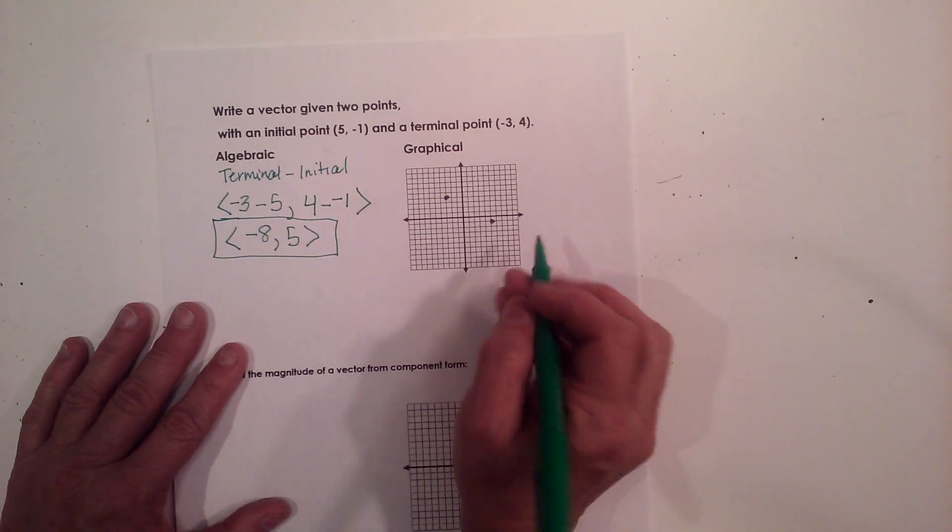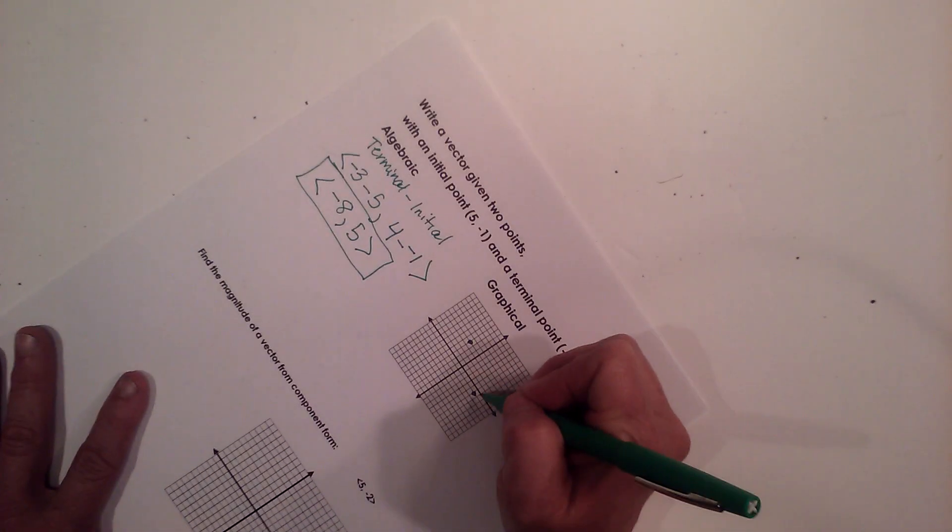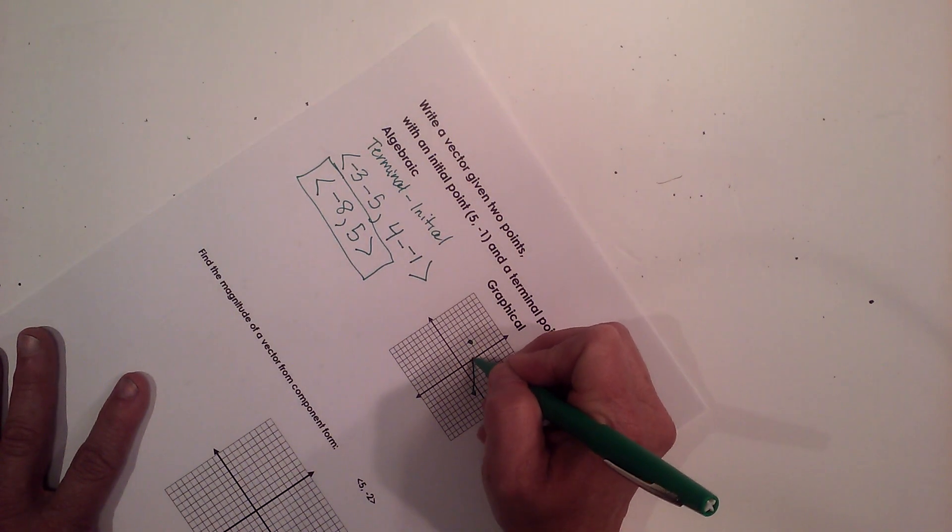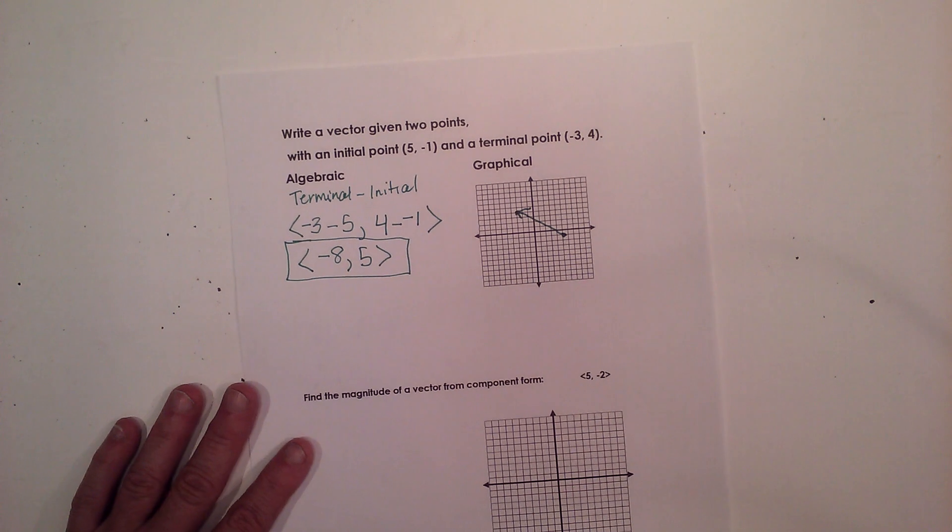Now I'm going to draw my vector. And to draw the vector, all I do is connect my initial to my terminal, and I draw an arrow indicating direction.